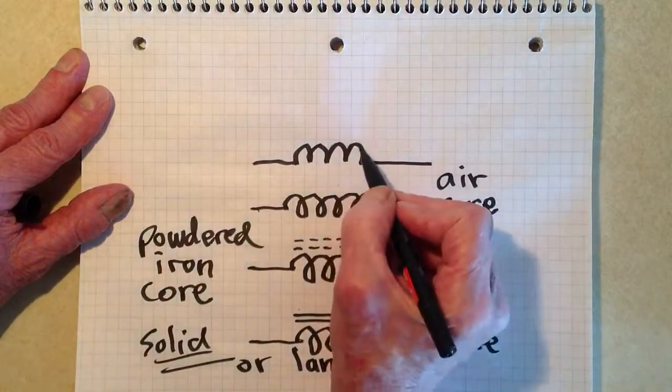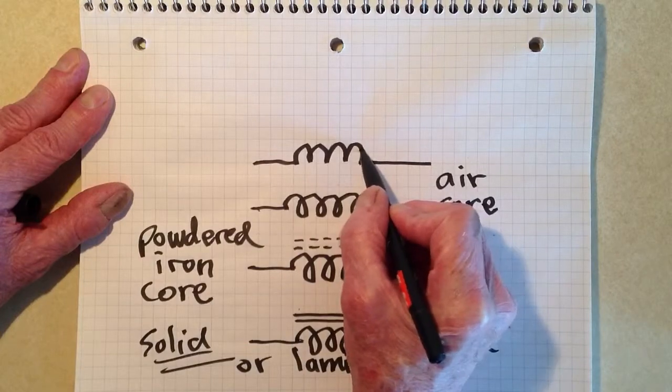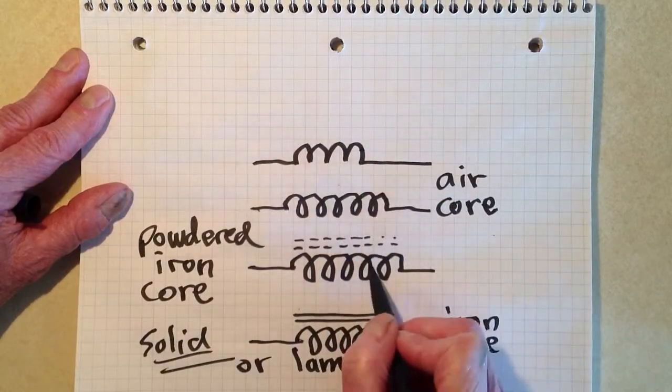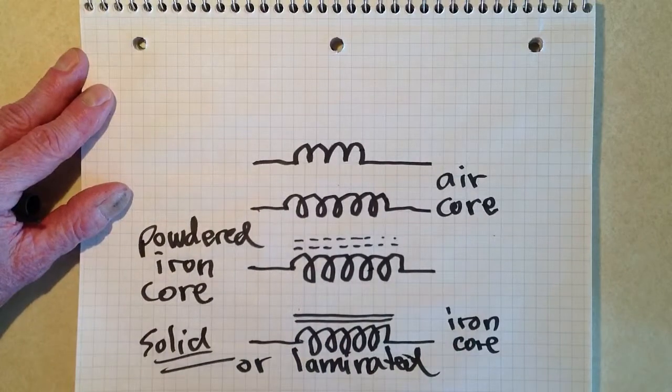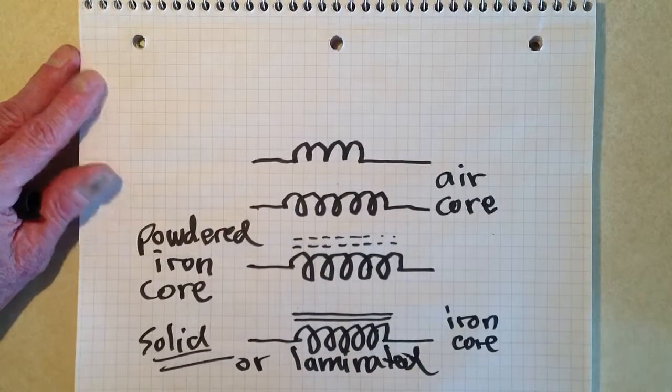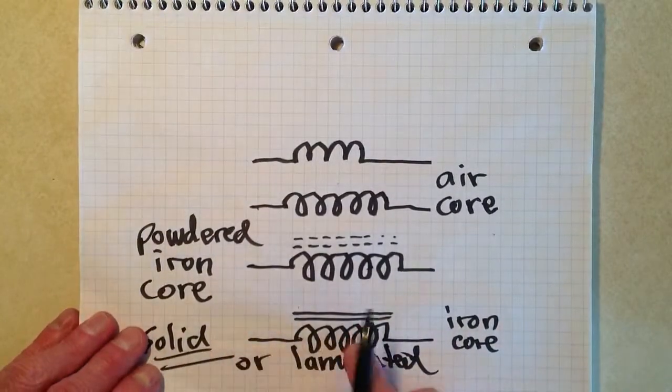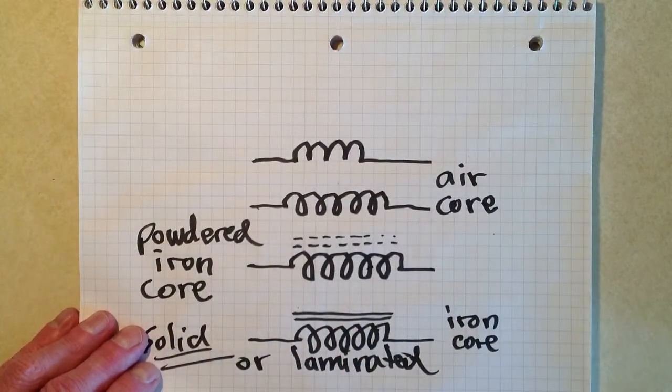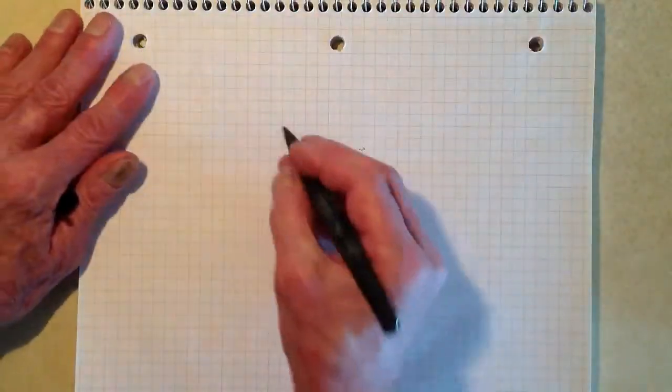And if you see an inductor with solid lines like that, that is a solid iron core or laminated. Generally speaking, the least inductance for any given number of turns in a solenoidal coil results from an air core, somewhat more from a powdered iron core, and even more from a laminated or solid iron core. An electromagnet would have a symbol like that. It would be a solid iron core. So those are the symbols for inductors.